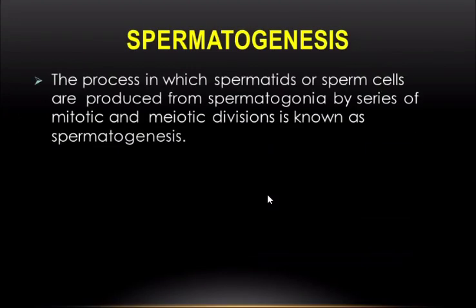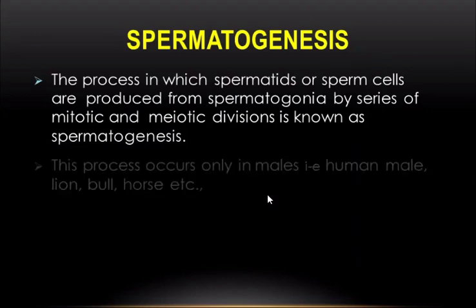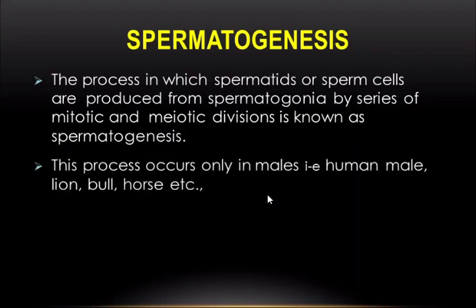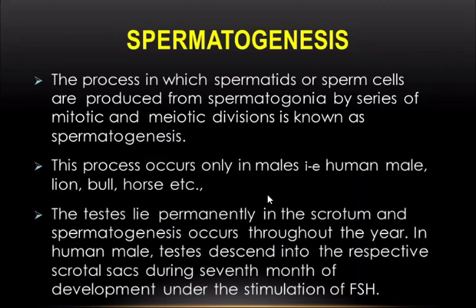Spermatogenesis is the process in which spermatozoa or sperm cells are produced from spermatogonia by a series of mitotic and meiotic divisions. This process occurs only in males — human male, swine, bull, or horse. The testis lies permanently in the scrotum and spermatogenesis occurs throughout the year.